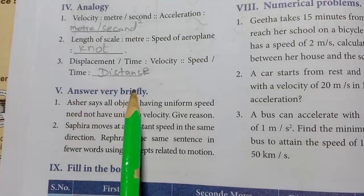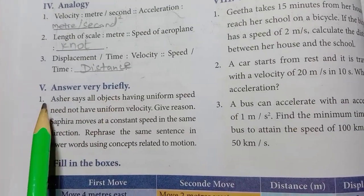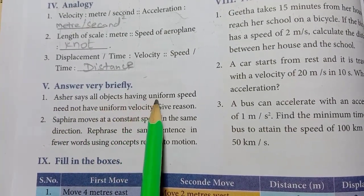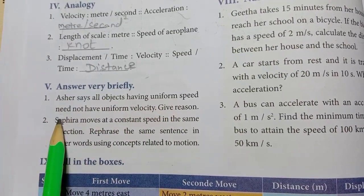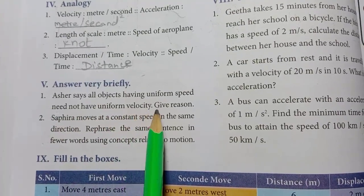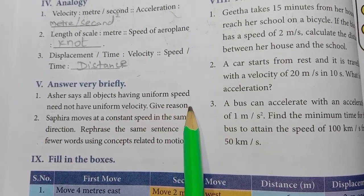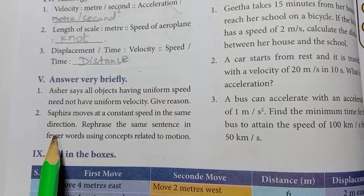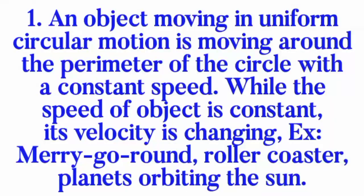Roman numeral 5: Answer very briefly. 1st one — Asher says all objects having uniform speed need not have uniform velocity. Answer: an object moving in uniform circular motion moves around the perimeter of a circle with constant speed, but while the speed is constant, its velocity is changing.